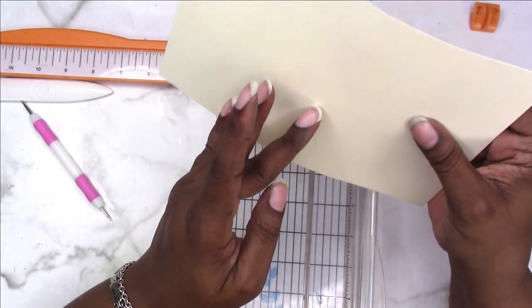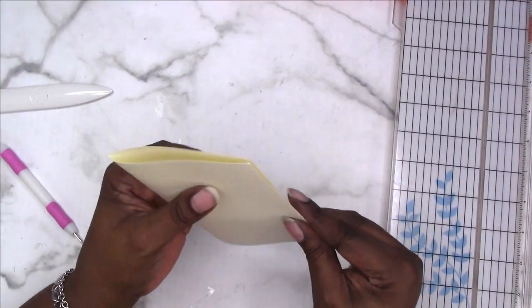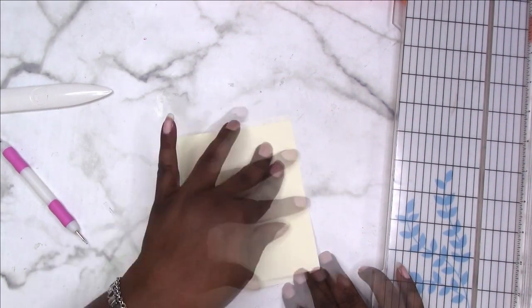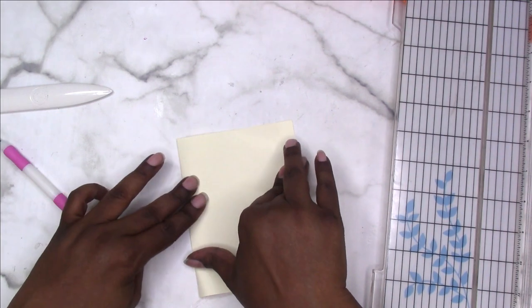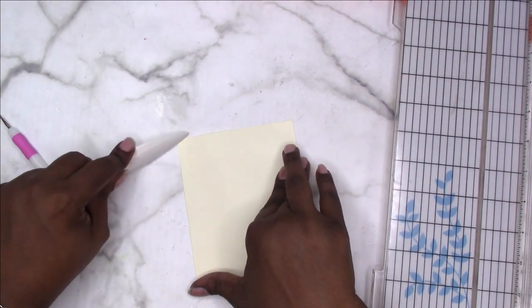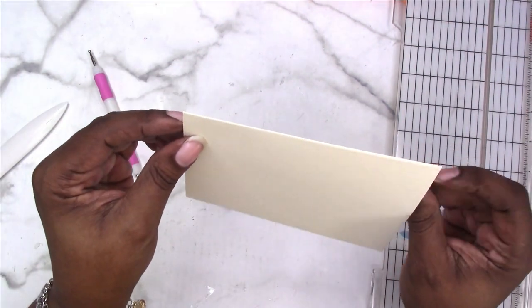This is where the fold would be. Then you can take your bone folder and flatten that crease. You could use the edge of a ruler, whatever works. And then we have a nice clean fold.